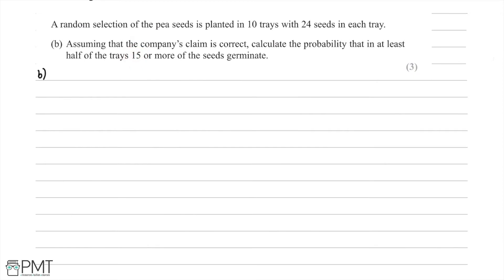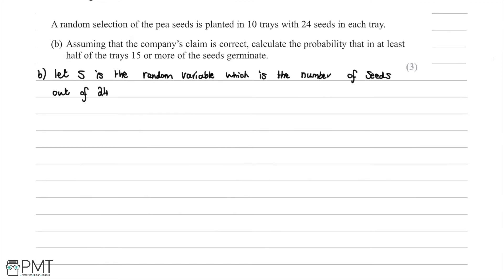We let S be the random variable representing the number of seeds out of 24 that germinate. We're going to have a binomial distribution because we have a repeated number of trials — 24 seeds. So S is binomially distributed with N equal to 24 and probability P equal to 0.55, since the company claims 55% of its pea seeds germinate.